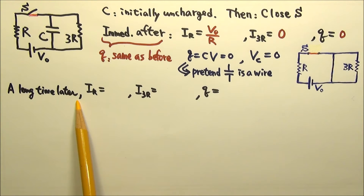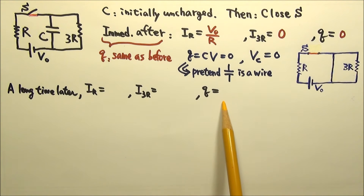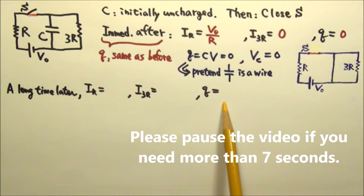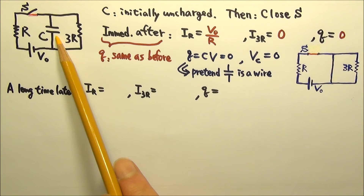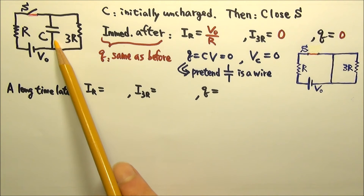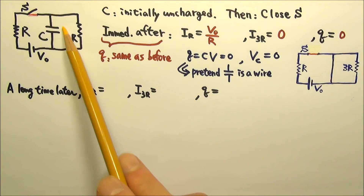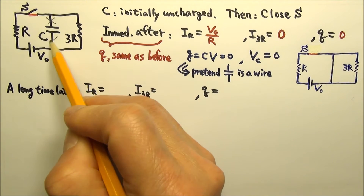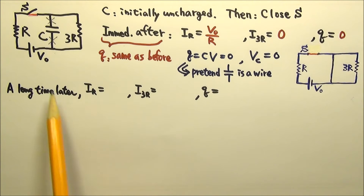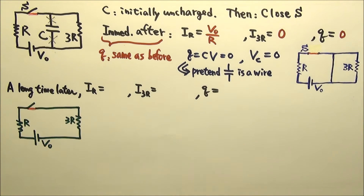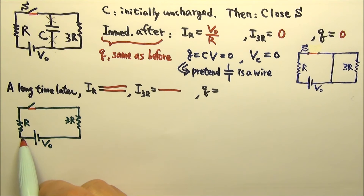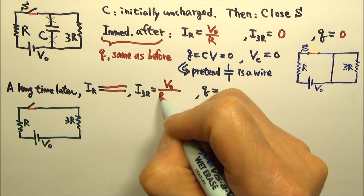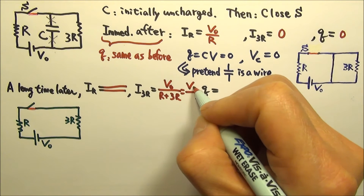How about a long time after the switch is closed? What are the current in each resistor and the charge on the capacitor? A long time after a change is made, the capacitor has either finished charging or finished discharging, so there is no more charging or discharging current — no more current in the capacitor segment. So we can cut the wires there and it won't make any difference. With the wires cut, the circuit is equivalent to R and 3R in series, getting the same current. The voltage is V₀ and the equivalent resistance is R + 3R, so the current is V₀ divided by 4R.